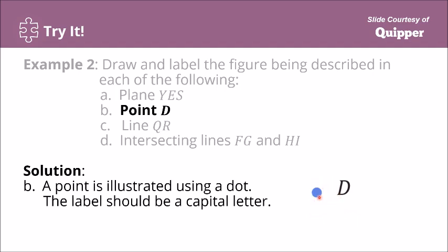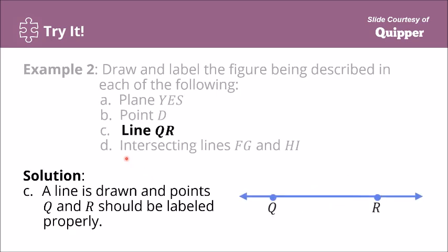For Line QR: draw a line with arrowheads in both directions and place Points Q and R on it. This line is called Line QR. In symbols, write QR with a line showing two arrowheads above the capital letters. This is read as Line QR.